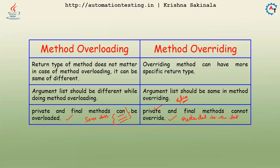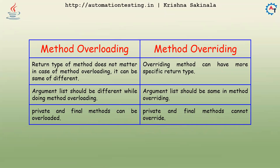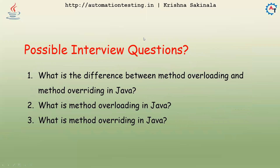If you use the extends keyword and inherit from a parent class, you cannot access the private method, so you cannot override it. Therefore, private and final methods cannot be overridden. These are all the differences between method overloading and method overriding.